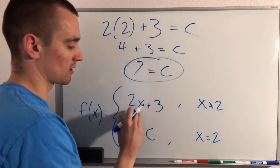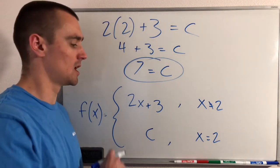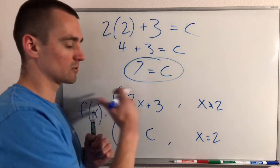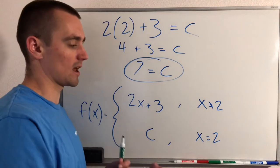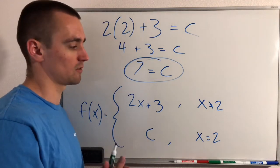So if we make c equal to 7, that'll fill in the hole that we would have in our other piece of our piecewise function, meaning that our piecewise function as a whole would not have any holes left in it, and therefore it would be continuous for all x values.